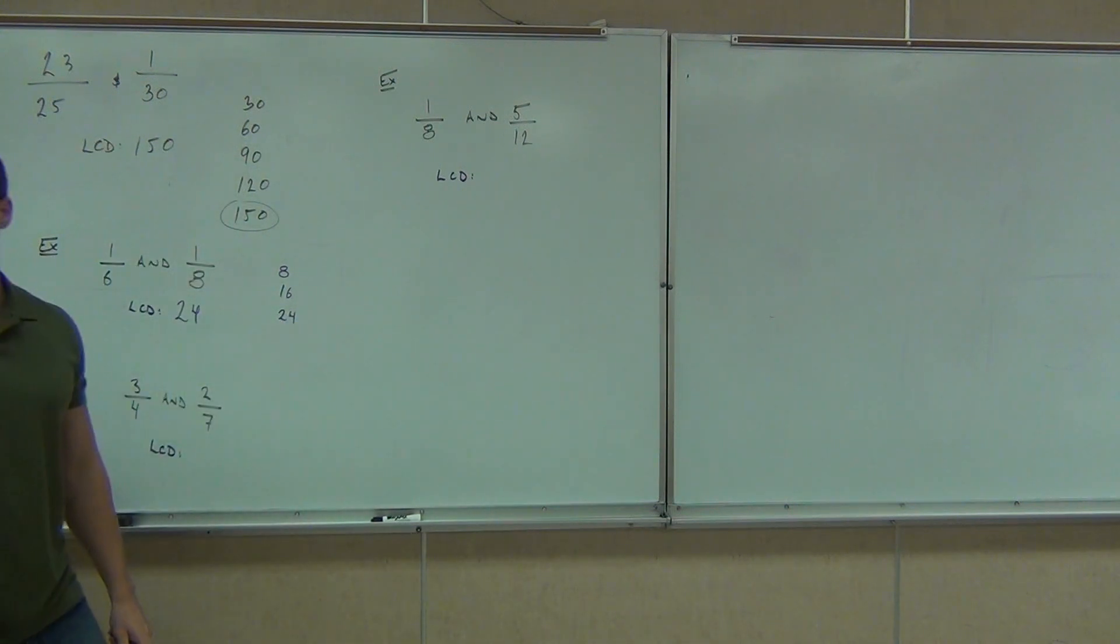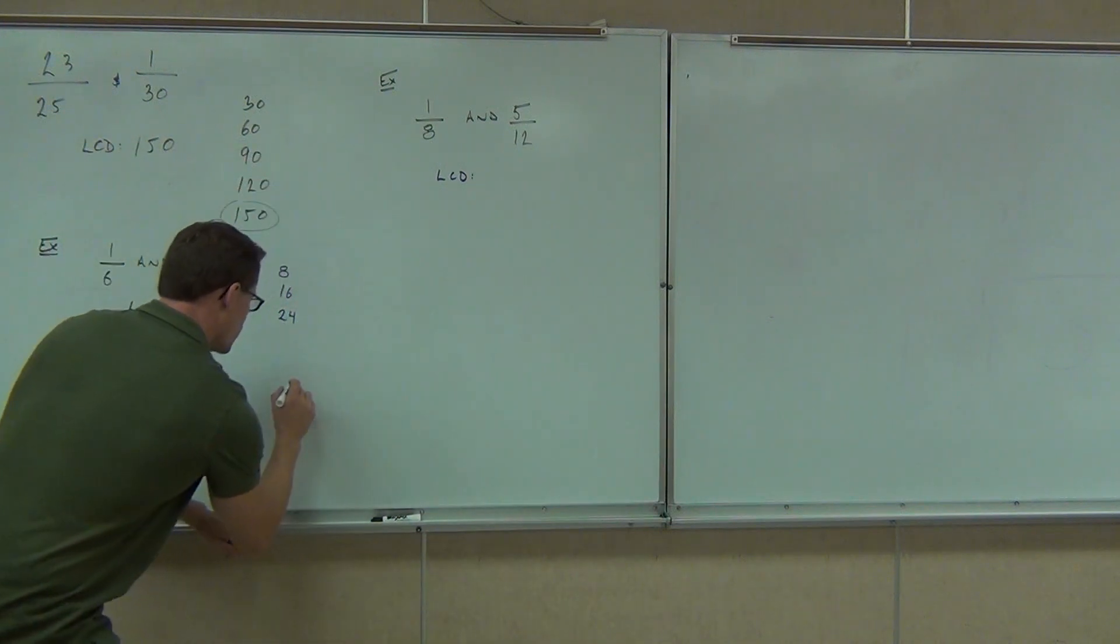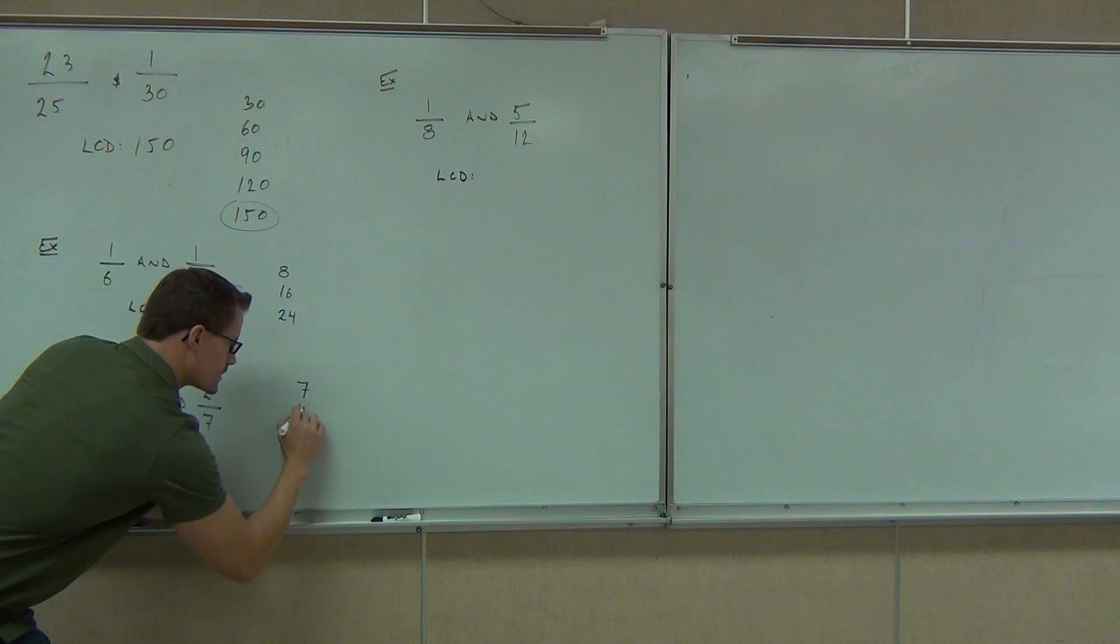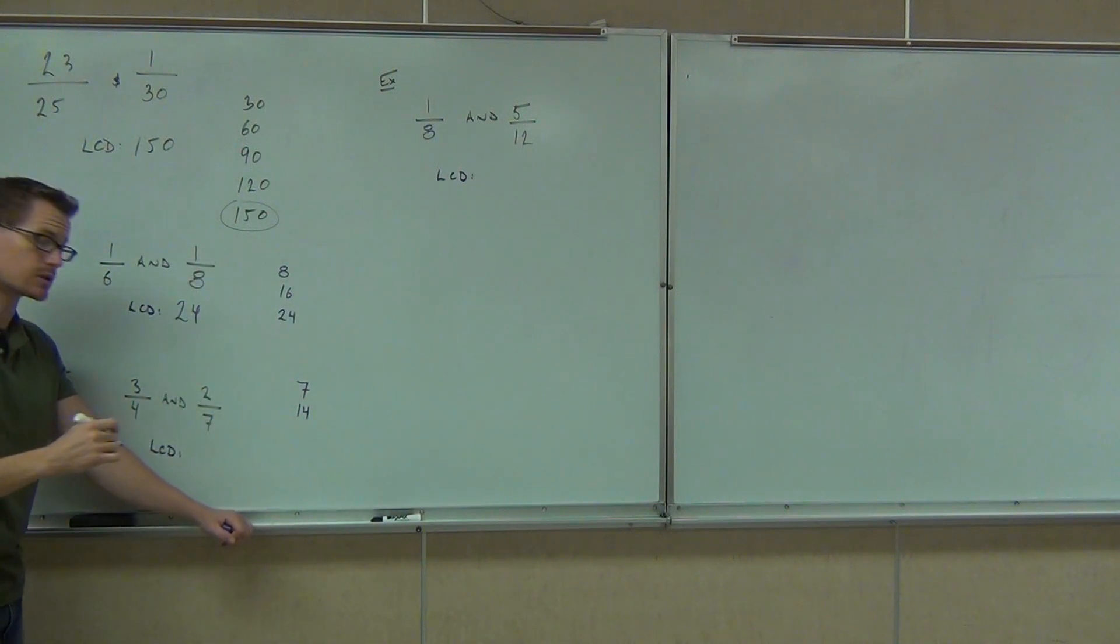Okay, next one. Four and seven. We're going to start with what number? Four or seven? Seven. For sure. Four clearly doesn't go into seven, so we're going to continue. We'll do our 14. Does four go into 14? No. Okay. Then we've got 21. Does four go into 21? No.